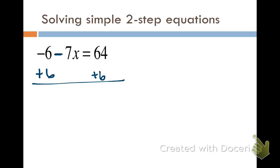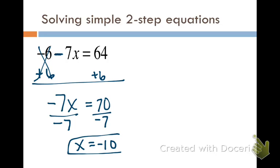Make sure that you keep this negative sign in front of the 7. It didn't go away. The only thing that went away was your negative 6. And then divide by negative 7. We get x equals negative 10. Make sure you never drop a negative sign. Keep it all the way until the end.